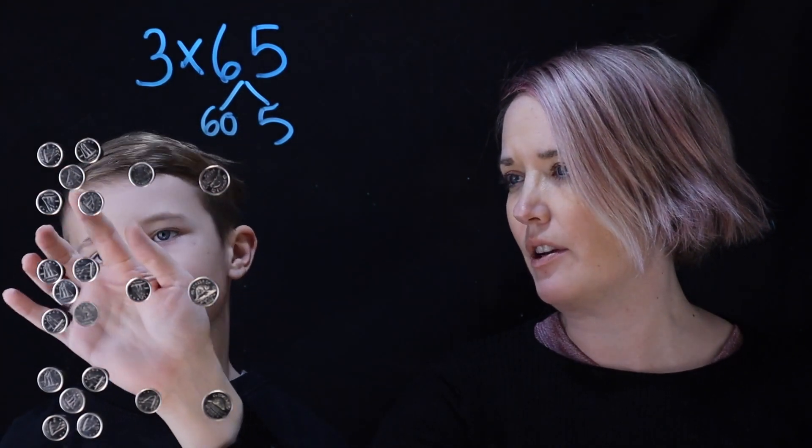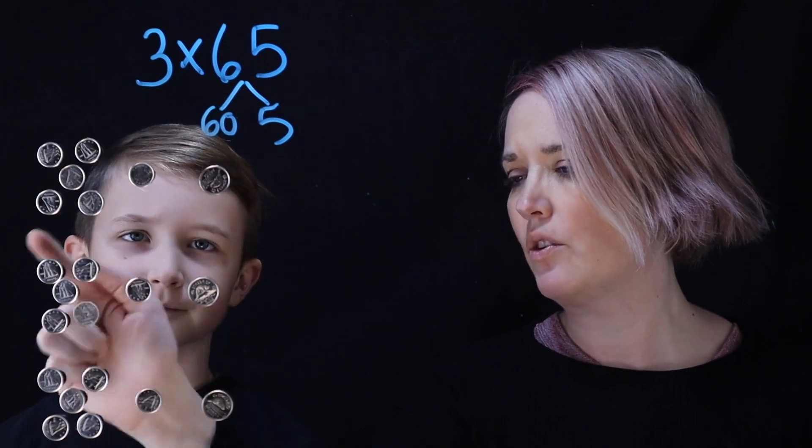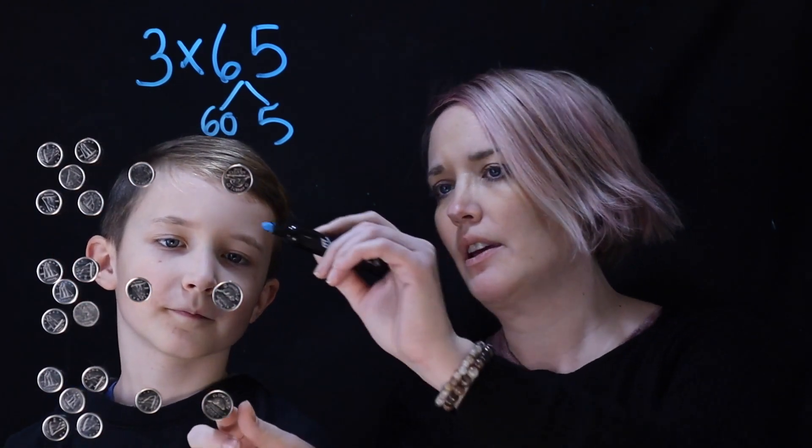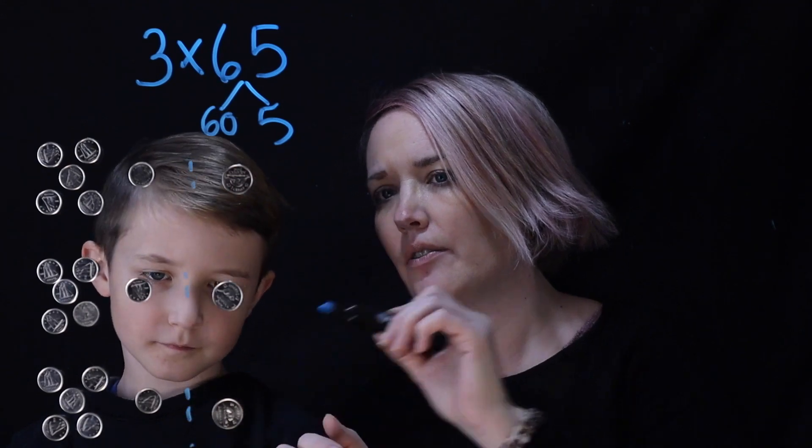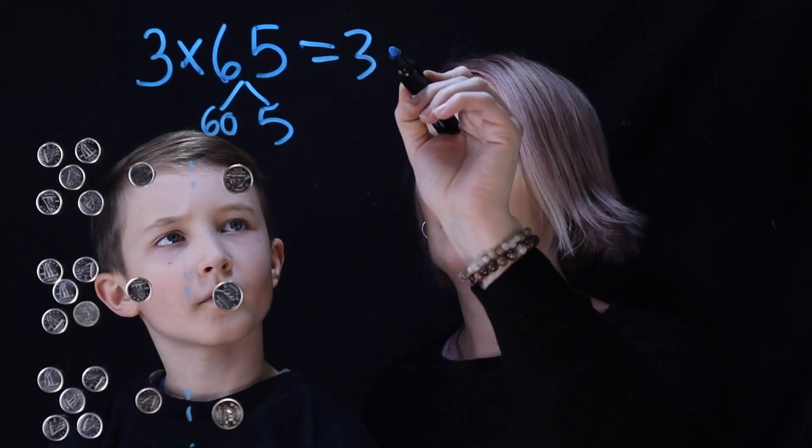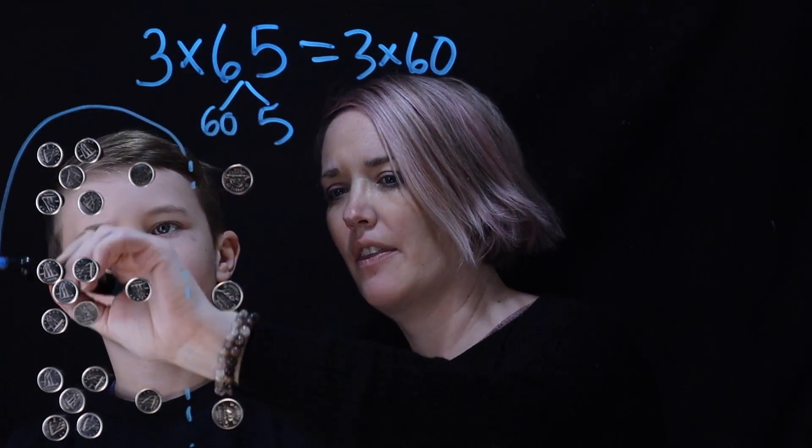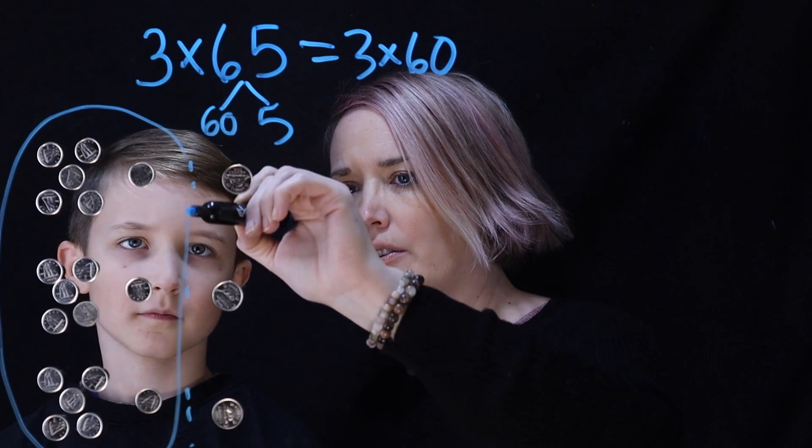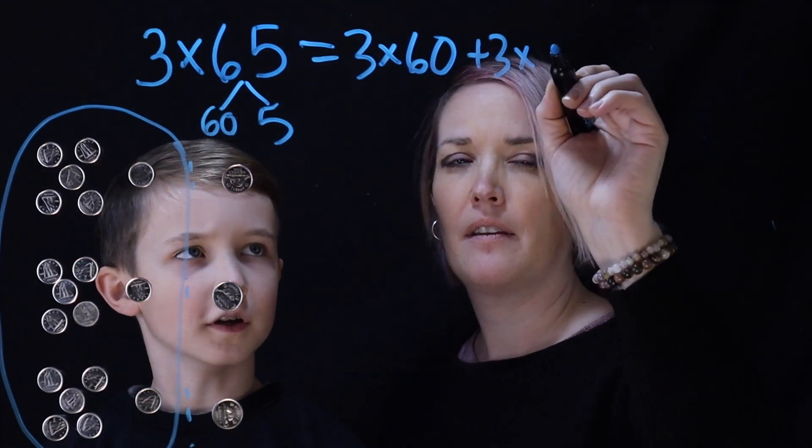So 10, 20, 30, 40, 50, 60, 65. So there's one group of 65, 2, 3. Okay and then you said you're going to split them so I'm going to just move these over like there's little invisible lines here. Right? And then we're going to go 3 times 60. So that's three groups of 60 which is this right here. And then 3 times 5.